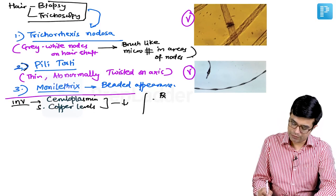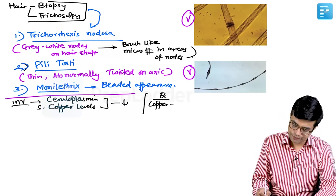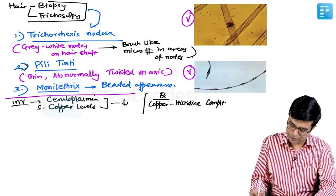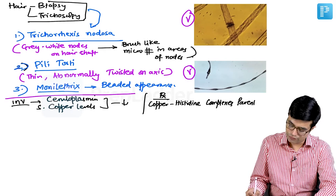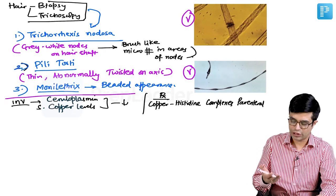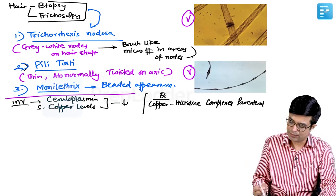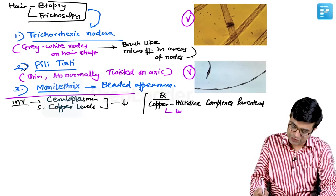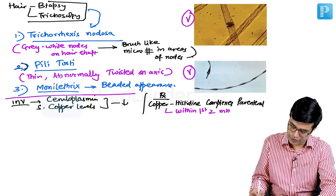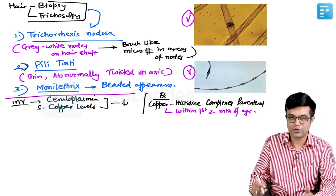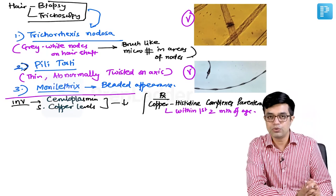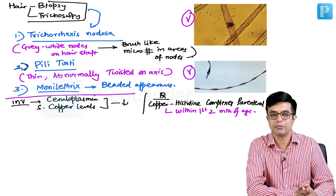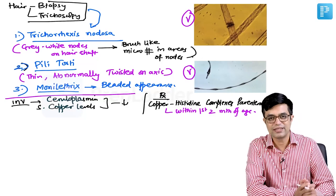And for therapy, for treatment, you need to give copper histidine complexes parenterally. There is no role of oral supplementation of copper in these individuals because whatever you give it will not be absorbed. And copper histidine complexes, please remember that they must be started within first two months of age. If you give them within first two months, the neurological abnormalities have been shown to improve. Otherwise, the patient's fatality rate may improve, but the neurological dysfunction may become permanent. This is called Menkes Kinky Hair Syndrome.